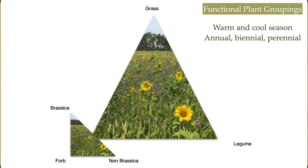When people say they have lots of diversity because they're growing oats, barley, wheat, triticale, and winter wheat — when you look at that group, I talk about functional plant groupings. I talk about warm and cool season species, annuals, biennials, perennials. Within the different groupings we have grasses, legumes, and broadleaf. I've taken the broadleaf group and broken it into three more: brassica, non-brassica, and forbs. When we talk diversity, we want to check off as many of these different functional plant groups as possible, and the more we have growing at the same time, the quicker we'll rebuild our soils.